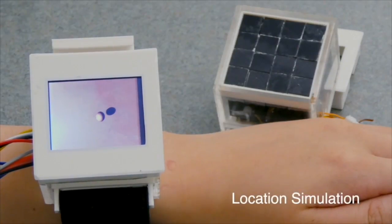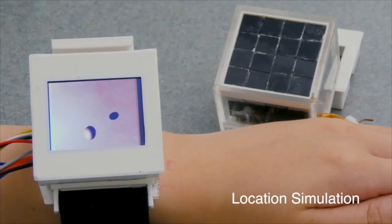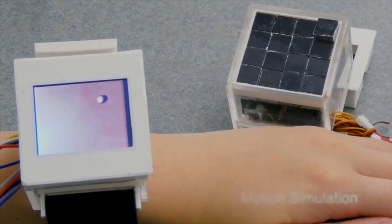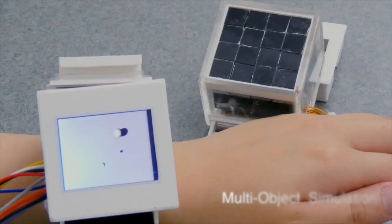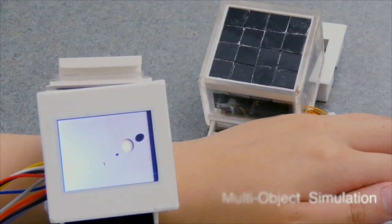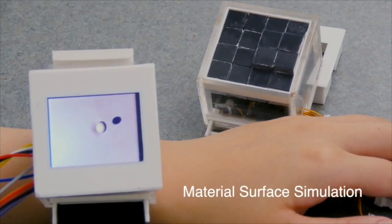The information that can be haptically rendered by Retroshape includes location, motion, multiple objects of different size, and material surface deformation.